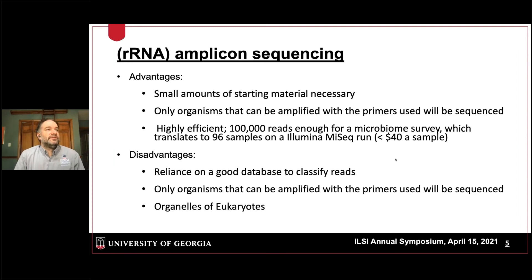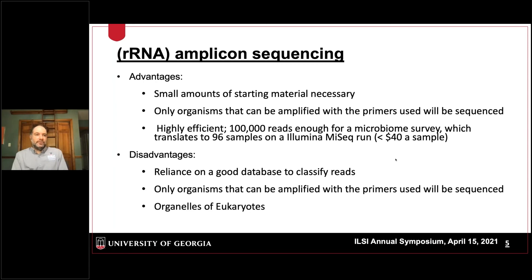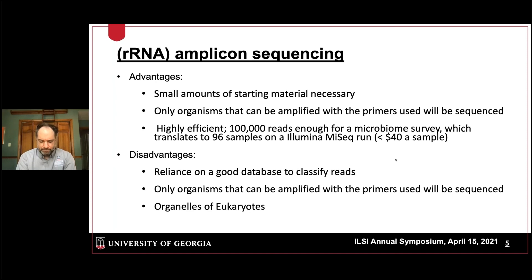One of the advantages of amplicon sequencing is that you can start with small amounts of starting material, which is especially important for environmental sampling — for instance, in food processing plants. Based on the primers you use, only the organisms of choice, such as only bacteria, will be sequenced. It's highly efficient: because you only look at one gene, a limited number of reads is enough for a microbiome survey, which translates to multiplexing 96 samples on an Illumina MiSeq run.